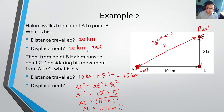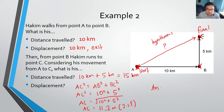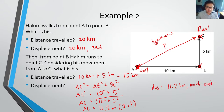So what is the displacement? The displacement is 11.2 kilometers in the direction of northeast. That means the difference between the starting position and the final position for Hakim is 11.2 kilometers northeast.